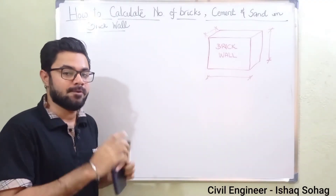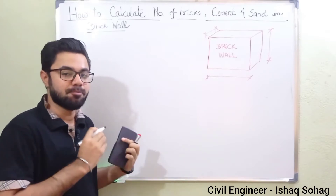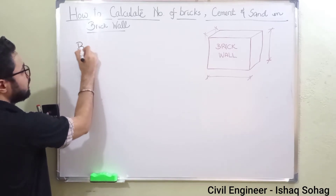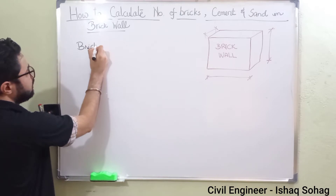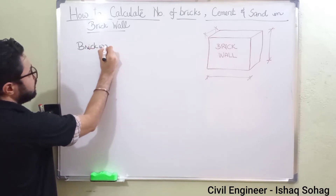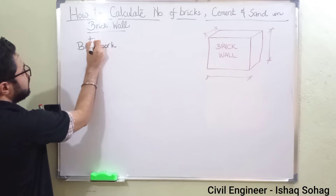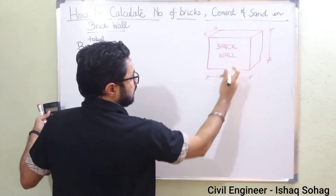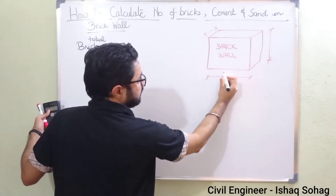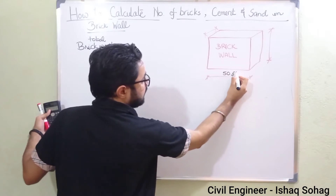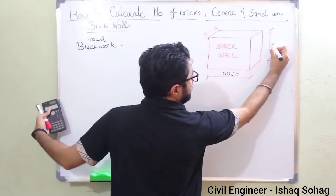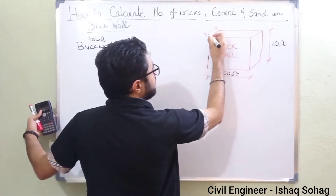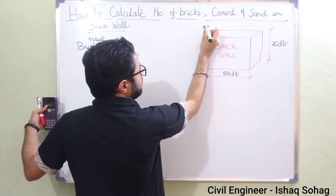So as I told you, first of all we are going to calculate the volume of mortar. For this purpose we have to find out the brickwork. I am here considering a brick wall with a length of 50 feet, a height of 20 feet.